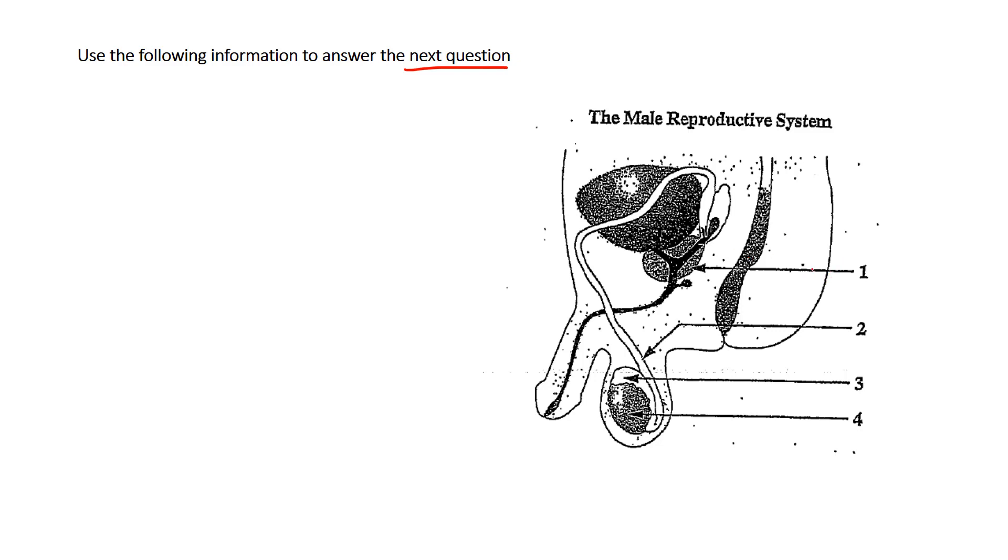This one here really quickly, if we take a look at number one, we see that number one is the prostate gland. We know the prostate gland provides mucus, and it's an alkaline mucus contributing to the semen.